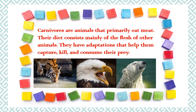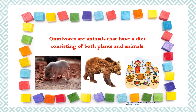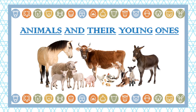Carnivores are animals that primarily eat meat. Their diet consists mainly of the flesh of other animals. They have adaptations that help them capture, kill and consume their prey. Tiger, eagle and polar bear are some of the examples of carnivore animals. Omnivores are animals that have a diet consisting of both plants and animals. Pig, bear and humans are omnivores.